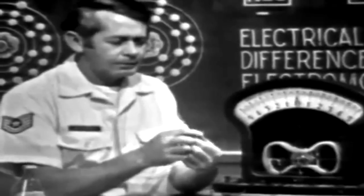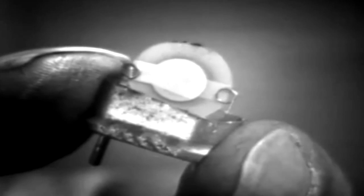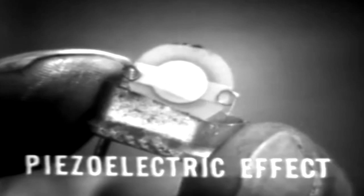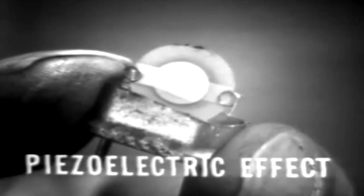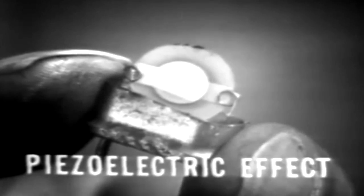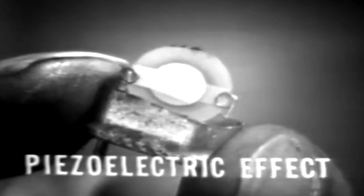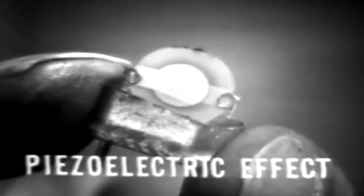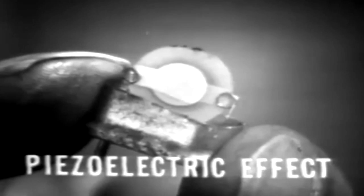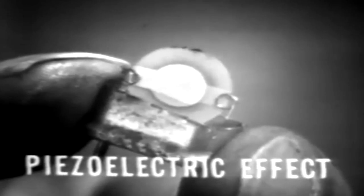Another amazing little device is this one, a crystal. It employs still another principle to develop a voltage, the piezoelectric effect. Now, the piezoelectric effect is this. Some crystalline materials possess the characteristic that if stress is placed on them, they produce a voltage. And the reverse of this principle is also true. That is, if a voltage is applied to the crystal, it will produce stress. This simply means that the crystal will vibrate or oscillate.